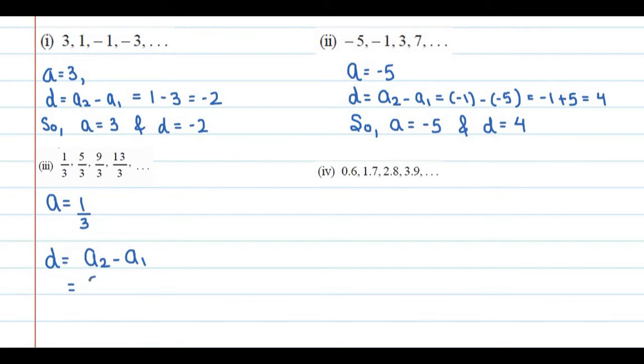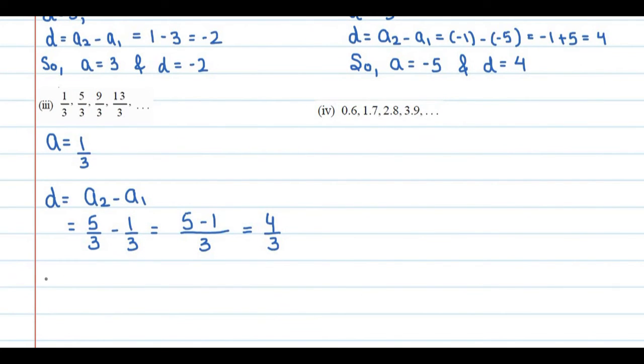So it is 5 by 3 minus 1 by 3. If you will solve it, then see, denominator 3 as it is. 5 minus 1. So this will become 4 upon 3. So here you can see this final answer. First term a is equal to 1 by 3, and common difference d is equal to 4 by 3. So this is your third part.